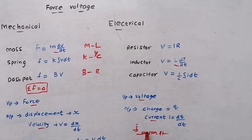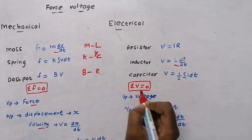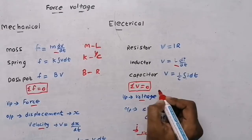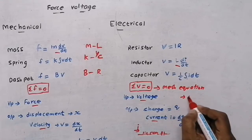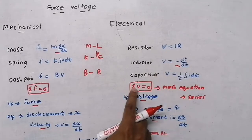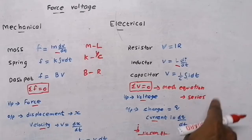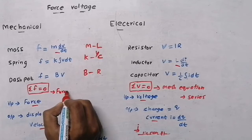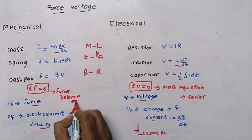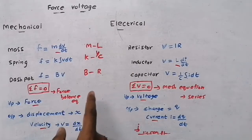In the mechanical system we write the force balance equation: sum of forces = 0. In the electrical system for force-voltage analogy, elements are connected in series. Applying the mesh equation (KVL), the sum of voltages equals zero. So the force balance equation corresponds to the mesh equation when elements are connected in series.